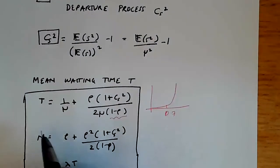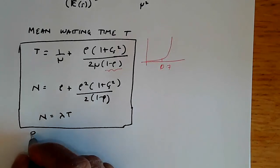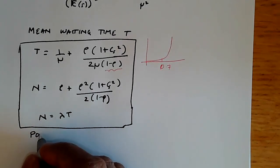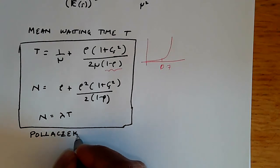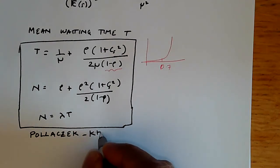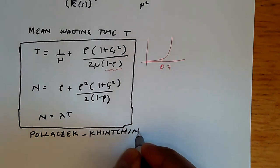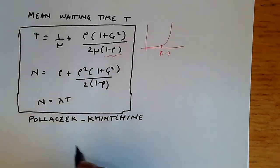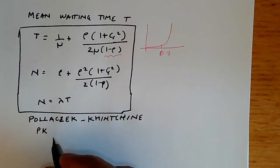These are called the Pollaczek-Khintchine formulas, named after the two mathematicians. Most people, including me, call it the PK formula because it's hard to pronounce.